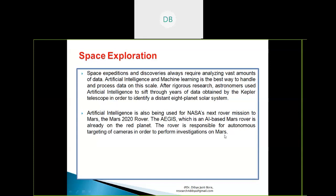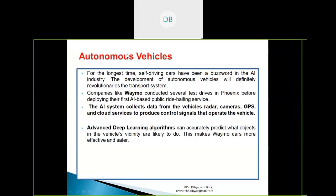Finally, autonomous vehicles. Self-driving cars have become a buzzword in the AI industry. Companies have already launched autonomous or driverless cars where you just need to input your destination and will be brought there without accidents. The AI system collects data from the vehicle's radar, cameras, GPS, and cloud services to produce control signals that operate the vehicle. Deep learning algorithms are used for this purpose.